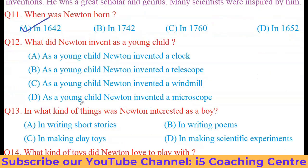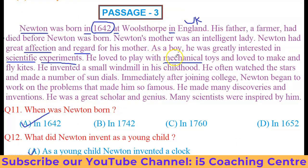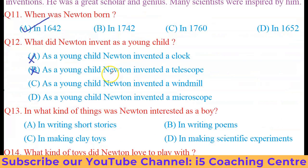Question 12: What did Newton invent as a young child? Options: A — a clock, B — a telescope, C — a windmill, D — a microscope. From the passage: 'He invented a small windmill in his childhood.' This sentence helps us go for the appropriate option — C is the right one: as a young child, Newton invented a windmill.